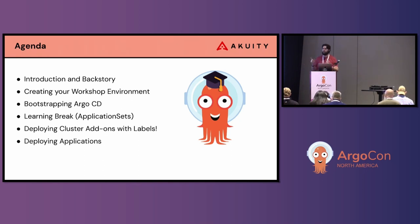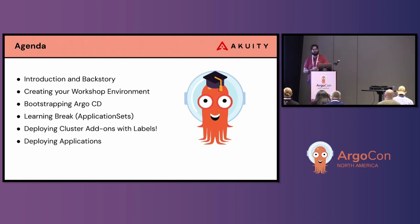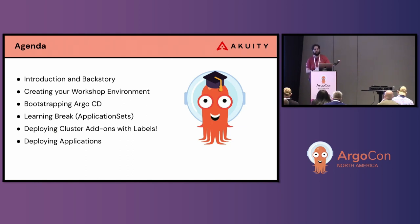We're going to take two learning breaks as we go through deploying the cluster add-ons with labels. The theme of this workshop is that we're going to use application sets and labels on our cluster configuration to determine when we should template and deploy an application to our cluster. Today in the workshop, we're going to focus specifically on labels being the selector for when the application should get deployed. Then we're actually going to deploy some applications in the application set just to round out the tutorial.